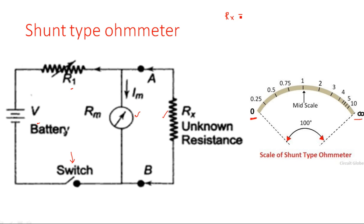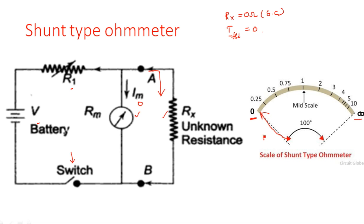When unknown resistance Rx equals zero ohms — meaning short-circuited — and A and B are short-circuited, there exists a maximum amount of current flowing through zero ohms (the short circuit). So almost IM equals zero — the full scale deflection current flowing through the meter is zero. This means no current flows through the meter, so the needle stays at the initial position. That is why zero ohms corresponds to zero current and the needle at the left (initial) position.